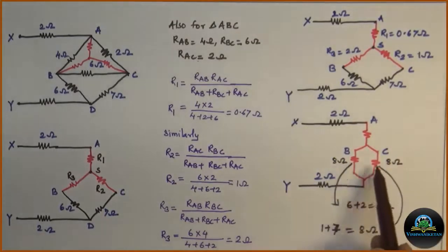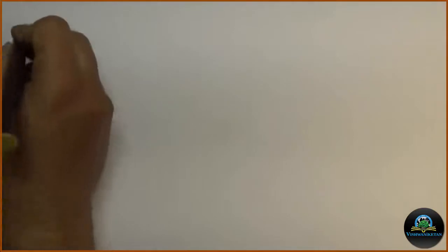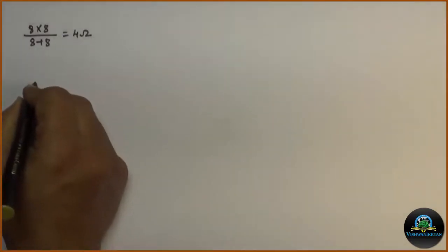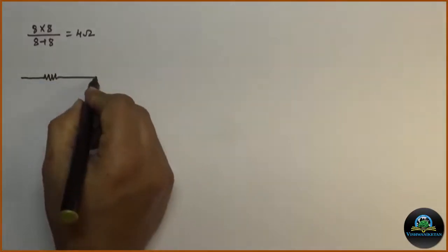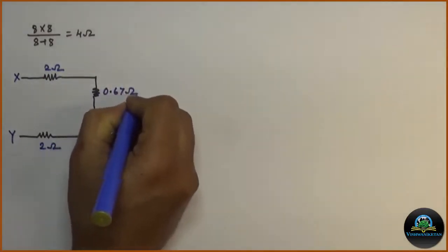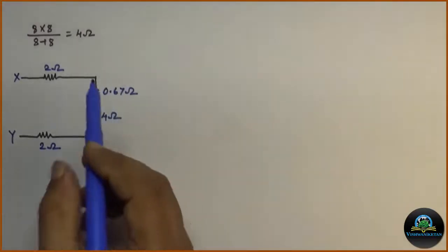Now two 8 ohm resistances are connected in parallel. Hence we can convert them into a single resistance. Also we know that when two resistances are connected in parallel, its equivalent resistance is given by half of the value of any one resistances. Therefore, the circuit again modifies. This is my 4 ohm resistance.